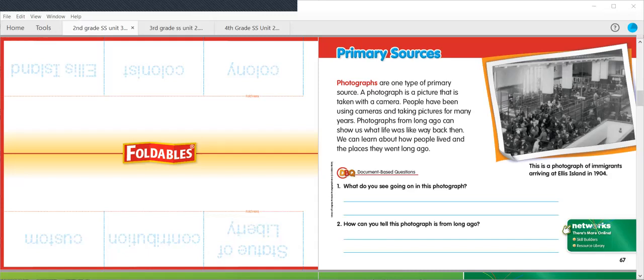Okay, I want you to go ahead and take a minute and read through what do you see going on in this photograph. So, take a look at the photograph, read the caption, and use a complete sentence to answer this question: What do you see going on in this photograph? Also, a complete sentence for the next question, number two. How can you tell this photograph is from long ago? So, what clues in this picture tell you that it's from long ago? And this will take you to the very end of our unit opener.